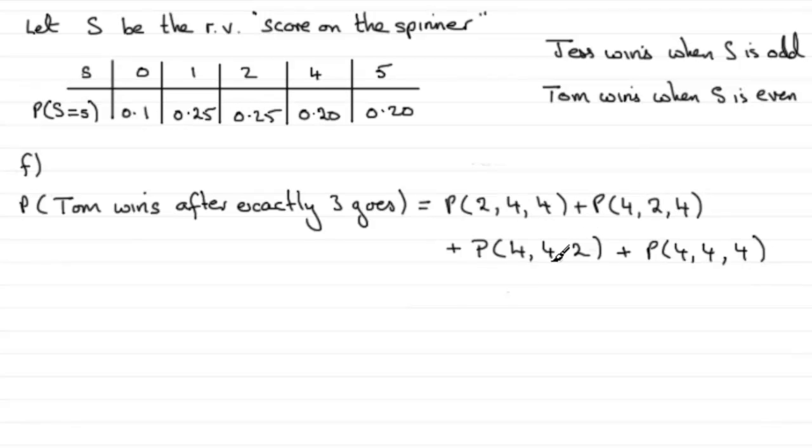Now, these three probabilities here are going to be exactly the same. They're basically going to be multiplying together the probabilities of 2, a 4 and a 4, even though the order has changed. So that would mean for a 2, it's going to be 0.25 multiplied by a 4 and a 4, 0.20 multiplied by another 0.20. And we've got 3 of those that we've got to add. So you might as well do 3 of those.